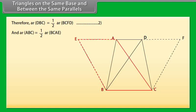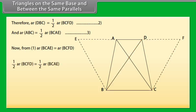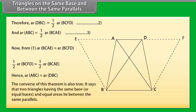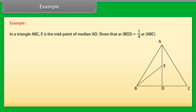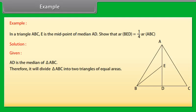We know that the diagonal of a parallelogram divides it into two triangles of equal area. Therefore, area of triangle DBC equals half of area of parallelogram BCFD — mark it as 2. And area of triangle ABC equals half of area of parallelogram BCAE — mark it as 3. From 1, area of parallelogram BCAE equals area of parallelogram BCFD, which implies half of each is equal. Hence, area of triangle ABC equals area of triangle DBC. The converse is also true: two triangles having the same base or equal bases and equal areas lie between the same parallels.